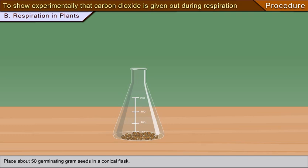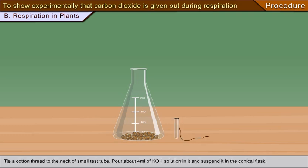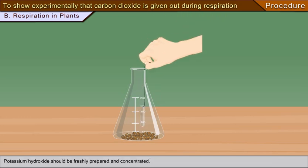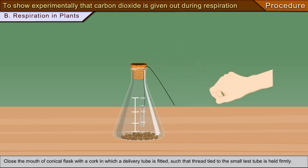Tie a cotton thread to the neck of a small test tube. Pour about 4 ml of KOH solution in it and suspend it in the conical flask. Potassium hydroxide should be freshly prepared and concentrated. Close the mouth of the conical flask with a cork in which a delivery tube is fitted such that the thread tied to the small test tube is held firmly.